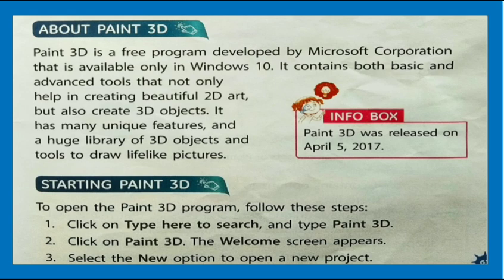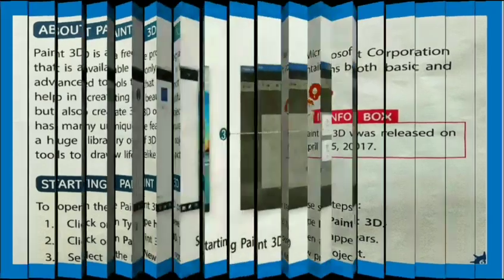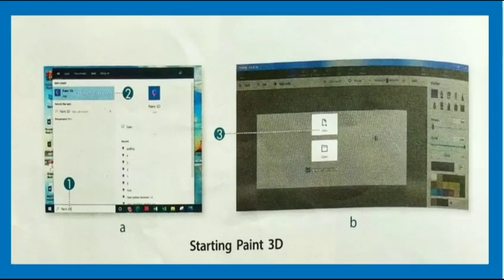Starting Paint 3D: To open the Paint 3D program, follow these steps. Click on 'Type here to search' and type Paint 3D. Click on Paint 3D — the welcome screen appears. Select the New option to open a new project. This is the image showing all the steps.